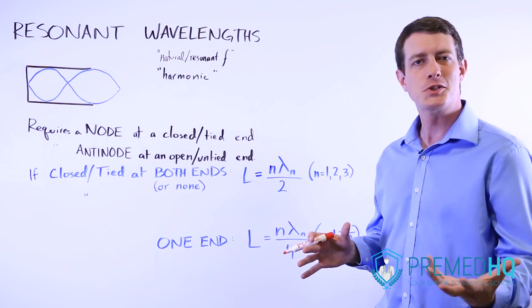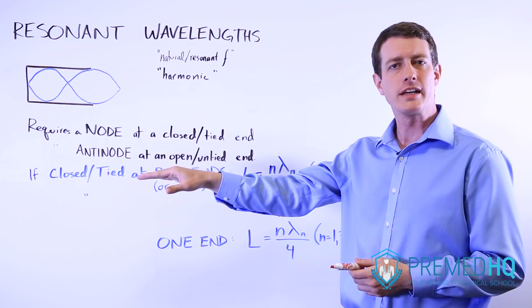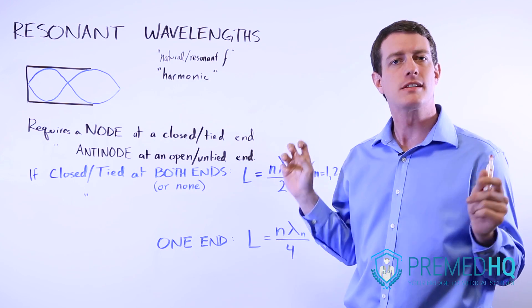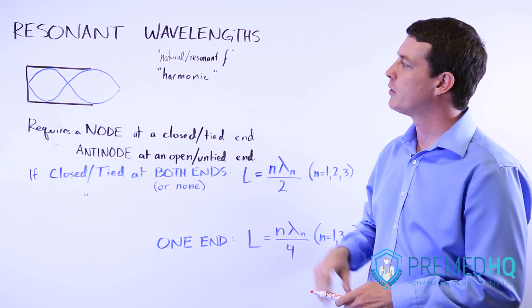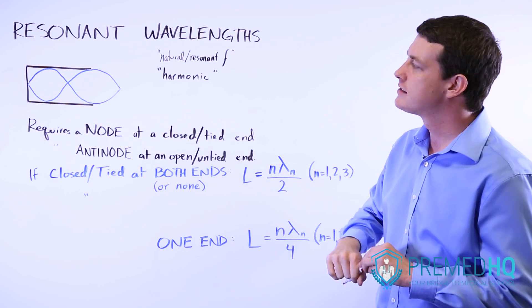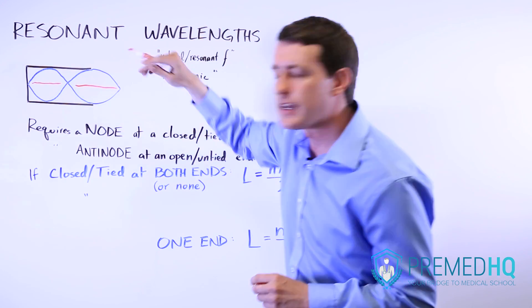A special thing happens when you produce a wave in a pipe or in a string. You can get what's called a resonant wavelength or simply resonance. This is caused by producing a wave with the exact right wavelength that when you add all the pieces of that wave together, it ends up being a totally neutral sound like that.